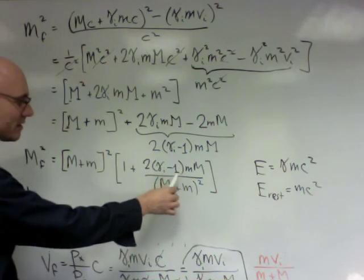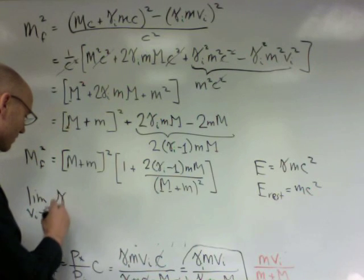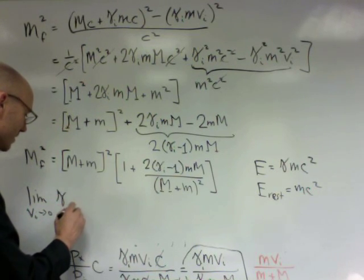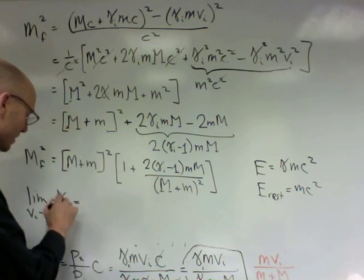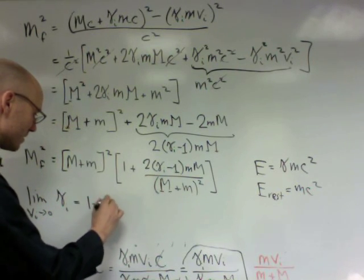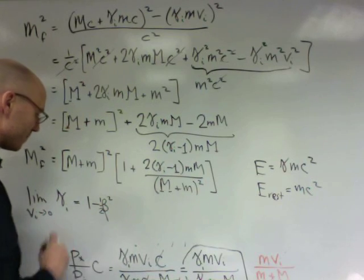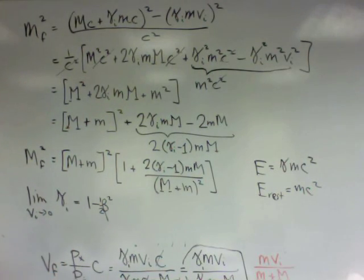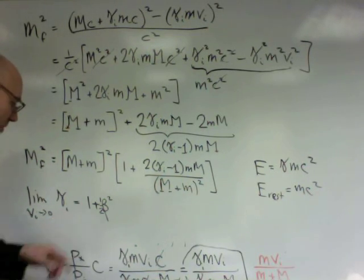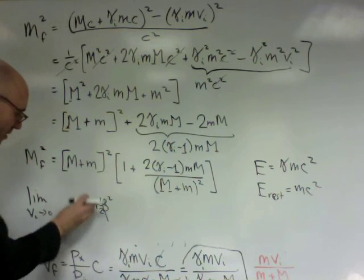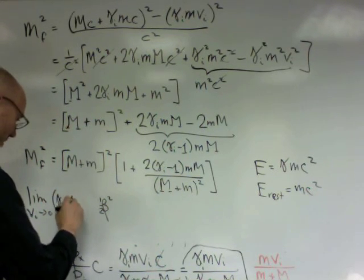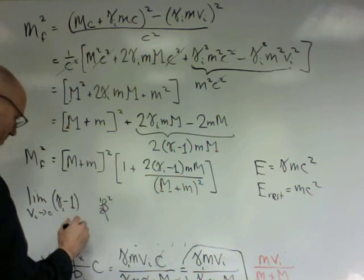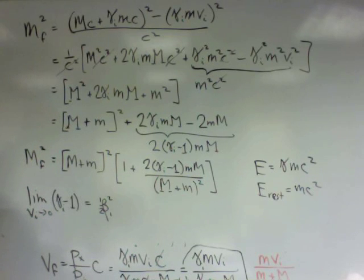So in the non-relativistic limit, remember gamma, the non-relativistic limit of gamma, this is something you did in your homework, is 1 plus 1 half beta squared. This was the non-relativistic limit for gamma. So the non-relativistic limit for gamma minus 1 is 1 half beta i squared.